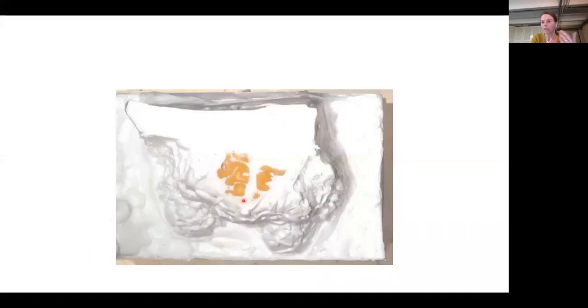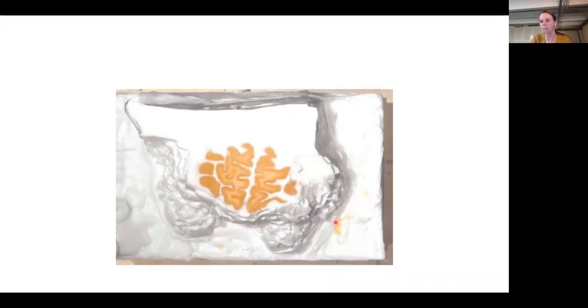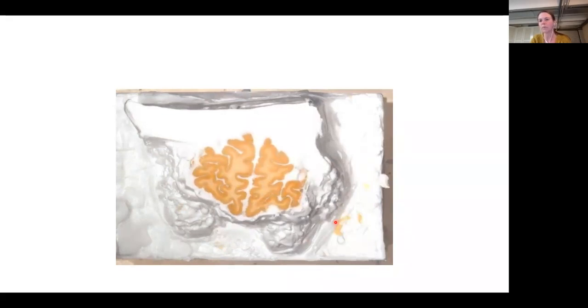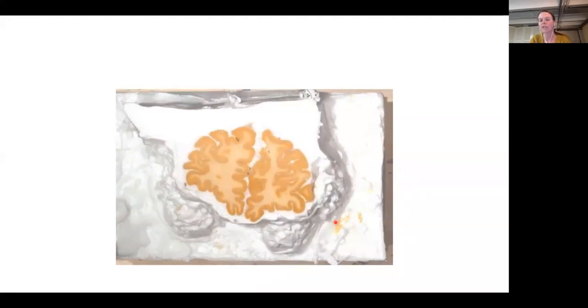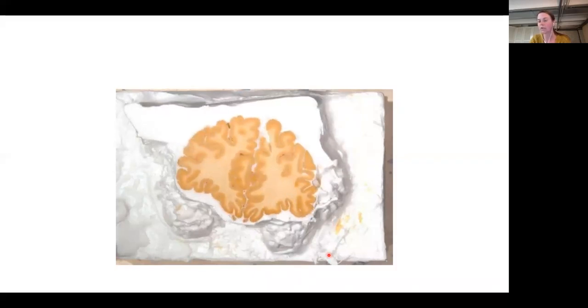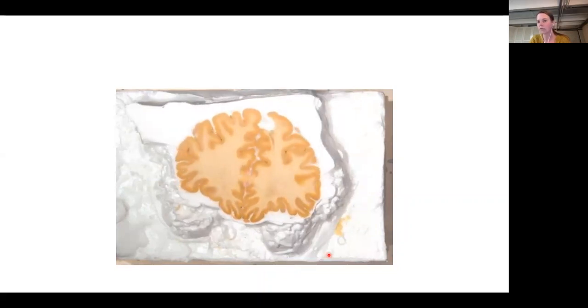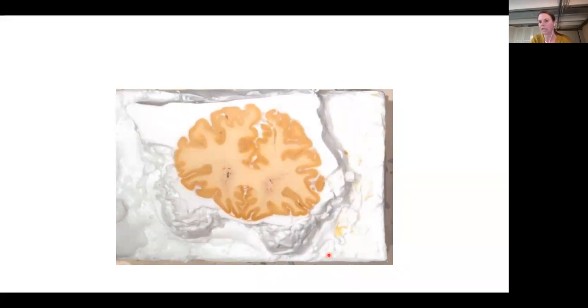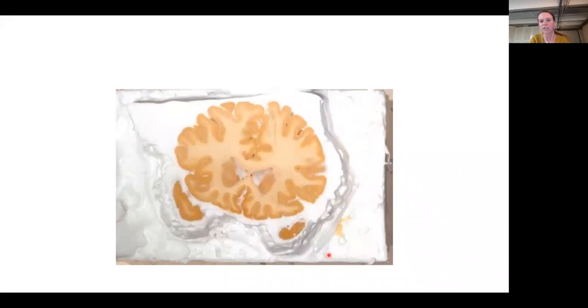So I can tell you how we deal with this. What you see here is we create for registration purposes, block face images. What we do is every time we cut a slice, we take an image of the tissue block. And this allows us to not register, but restack these data. And that gives us a 2D to 2D problem, just like Juan Eugenio Iglesias explained yesterday. And that facilitates the registration already.